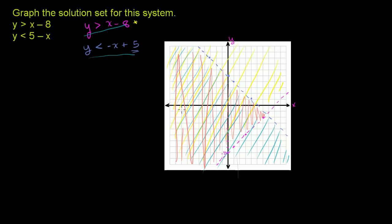You can verify this by picking a random point in this area and checking it satisfies both inequalities. An easy one is x equals 0, y equals 0. If y is 0: 0 is greater than 0 minus 8 — that's true, 0 is greater than negative 8. For the second equation: 0 is less than 5 minus 0 — that's true, 0 is less than 5. This orange area is our solution set.